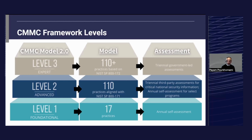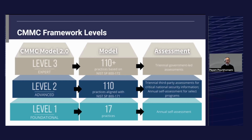CMMC Level 3 has 134 practices. It's intended for contractors who, per the DOD, support its most critical programs and technologies. Contractors already selected for a DIBCAC high assessment are possibly going to be Level 3 candidates, and Level 3 assessments will be conducted by DIBCAC directly and not by a C3PAO. CMMC Level 3 includes all CMMC Level 2 requirements, plus 24 additional requirements selected from NIST SP 800-172. DIBCAC's available bandwidth for assessments will constrain the number of contracts that may have Level 3 requirements, so most contractors may not be required to achieve Level 3 compliance.